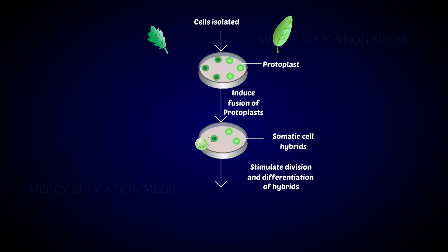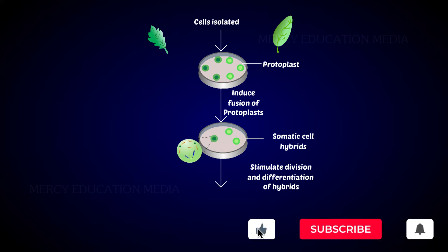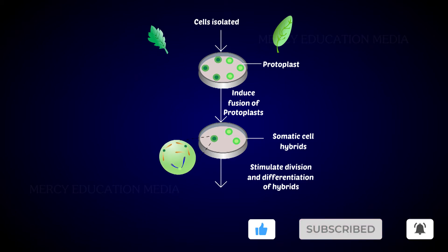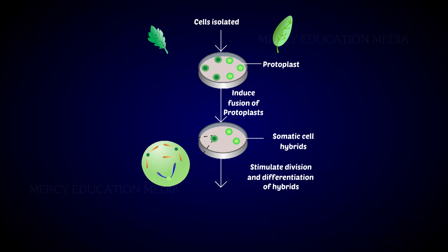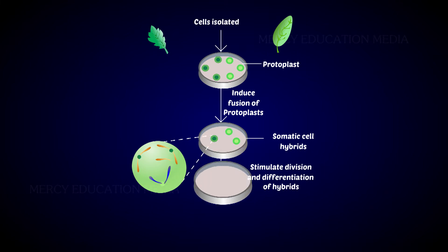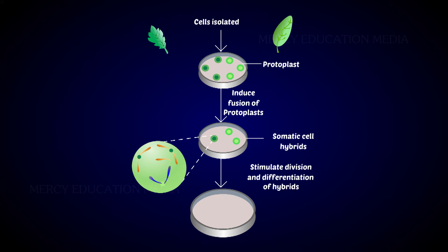Fusion of protoplasts from two different varieties can be enhanced by treatment with a chemical called polyethylene glycol (PEG) in the presence of high voltage electric current on a suitable medium. Through this method, somatic hybrid plants with desirable changes can be obtained. This method in plant breeding is called protoplasmic fusion.